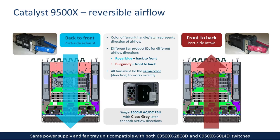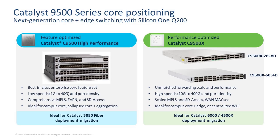This design avoids the need to increase fan tray RPM or add more fan trays to cool the system. The 9500X-60L4D uses the same power supply unit and fan tray unit as the 28C8D model released early last year. This means we get all the airflow benefits of that fan tray, including reversible airflow — supporting both front-to-back and back-to-front depending on your rack space requirements. There are two separate PIDs for the fan trays, one for back-to-front and one for front-to-back. All six fan trays must match in airflow direction — you cannot mix and match.